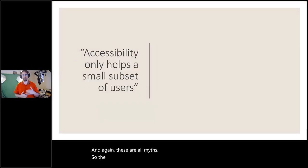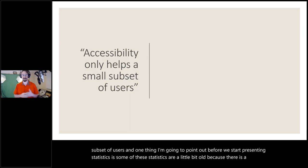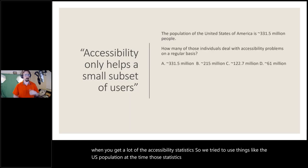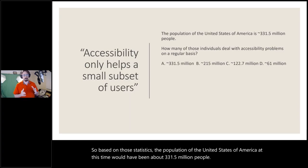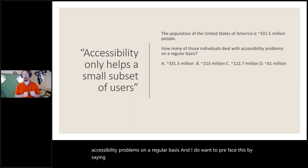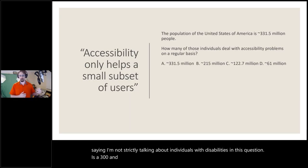The first myth is that accessibility only helps a small subset of users. Some of these statistics are a little old because there's a delay in getting accessibility data, so I've used the U.S. population at the time those statistics were presented — about 331.5 million people. How many people in the United States deal with accessibility problems on a regular basis? And I'm not strictly talking about individuals with disabilities. Is it 331.5 million? 215 million? 122 million? 61 million?